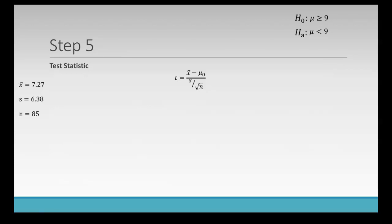So the formula for a t score, we take our x bar and we subtract mu null. So that's going to be 7.27 as our x bar minus our mu null which is nine. We just find that up in our null hypothesis. And we divide all of that by s over the square root of n. And those are given to us over on the left side. So we plug in all of our numbers here. So 7.27 minus nine over 6.38 divided by the square root of 85. Simplifies down into negative 1.73 over 0.692, giving us a t score of negative 2.50. So that's our test statistic.